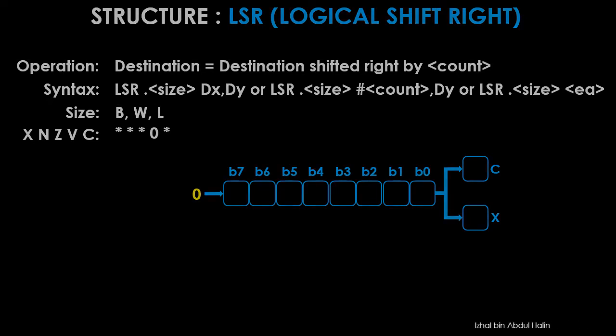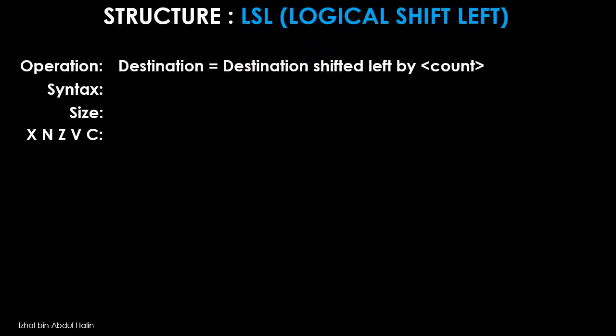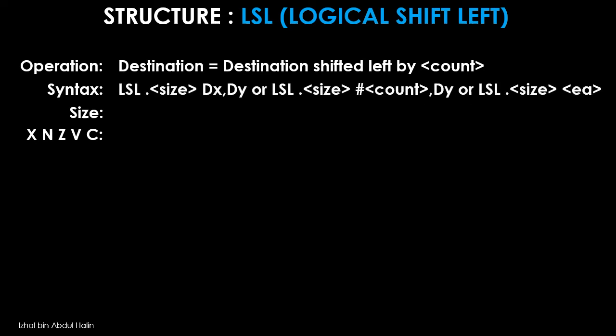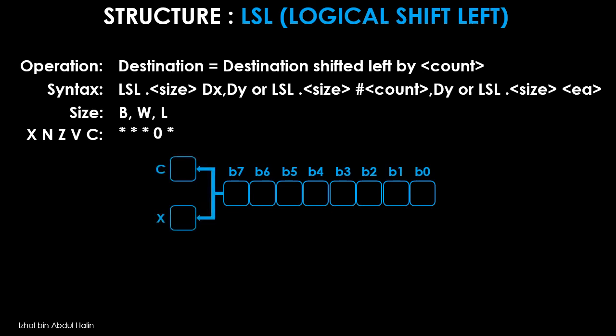For the LSL instruction, used to logical shift left data in a destination operand, data is shifted one bit at a time until the number of shifts equals the specified count. The general syntax shows three variants available, with operand sizes of byte, word, and long word. All status registers are affected. The operand's MSB is connected to the C and X flags, and the LSB is fed with a new zero each time data is shifted. The LSL register structure resembles the ASL structure. For word or long word operands, change the operand size to 16 bits and 32 bits respectively.